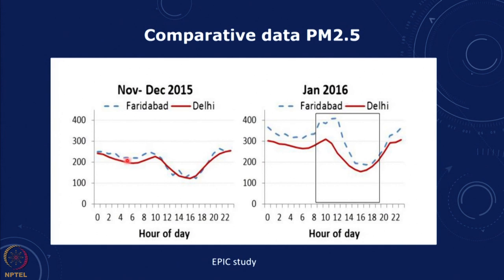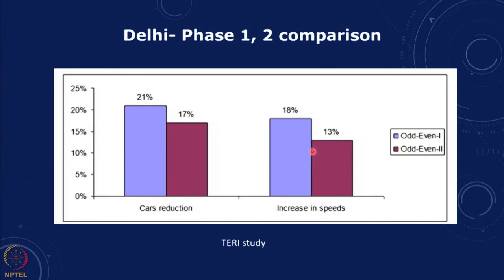Looking at hour-of-day data from November to December 2015 — when there was no odd-even scheme — Delhi and Faridabad track together. In January 2016, there is a dip in Delhi compared to Faridabad, suggesting some evidence of impact. Across both phases, the reduction in cars was about 21 percent and 17 percent respectively, and this also resulted in an increase in traffic speeds.